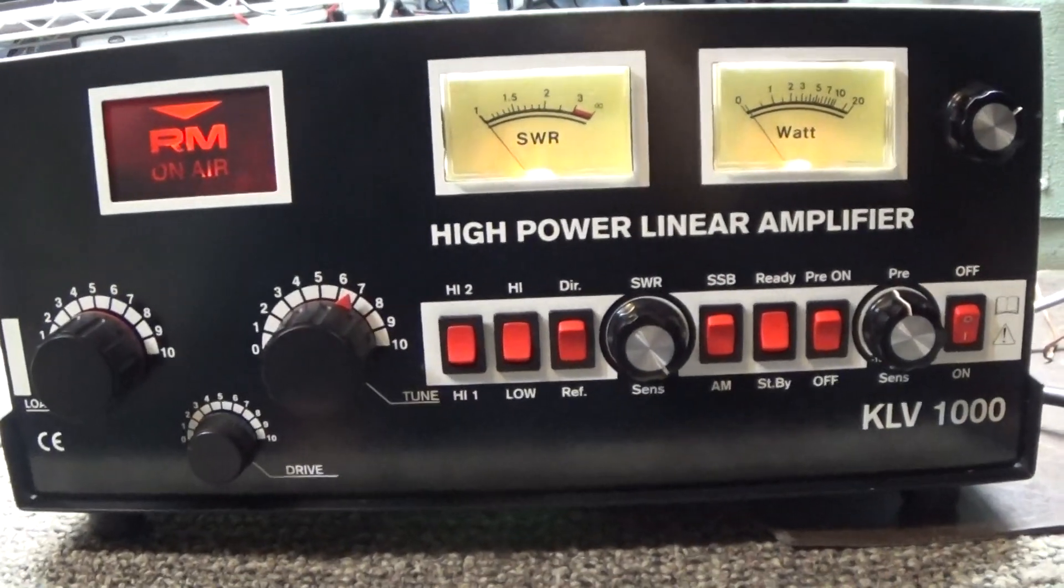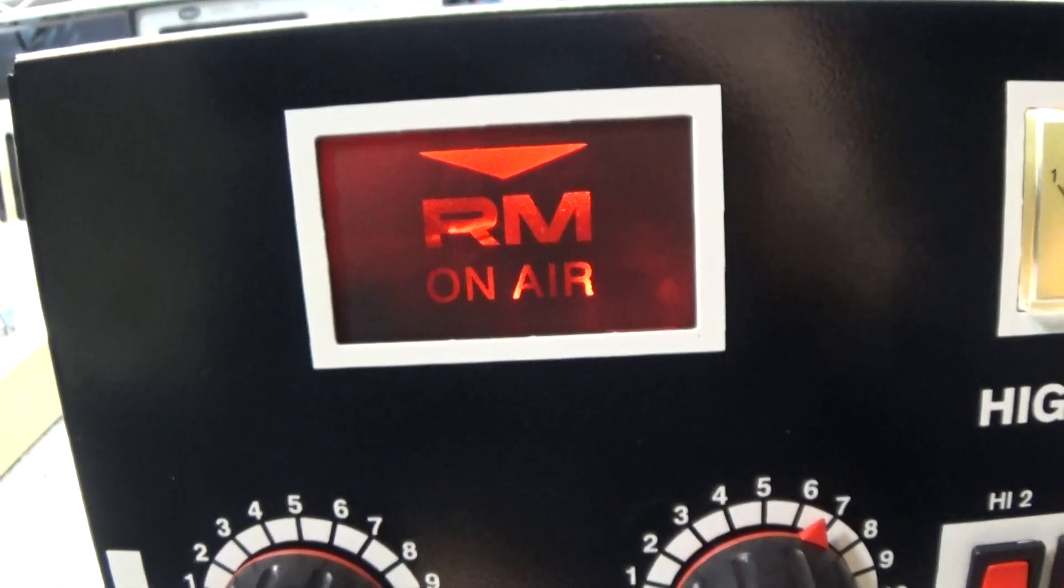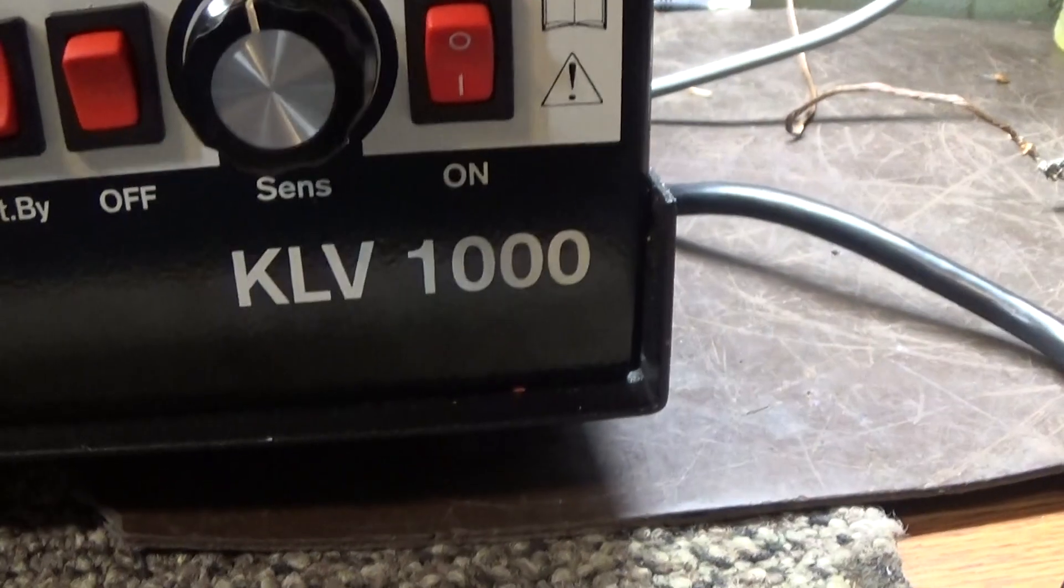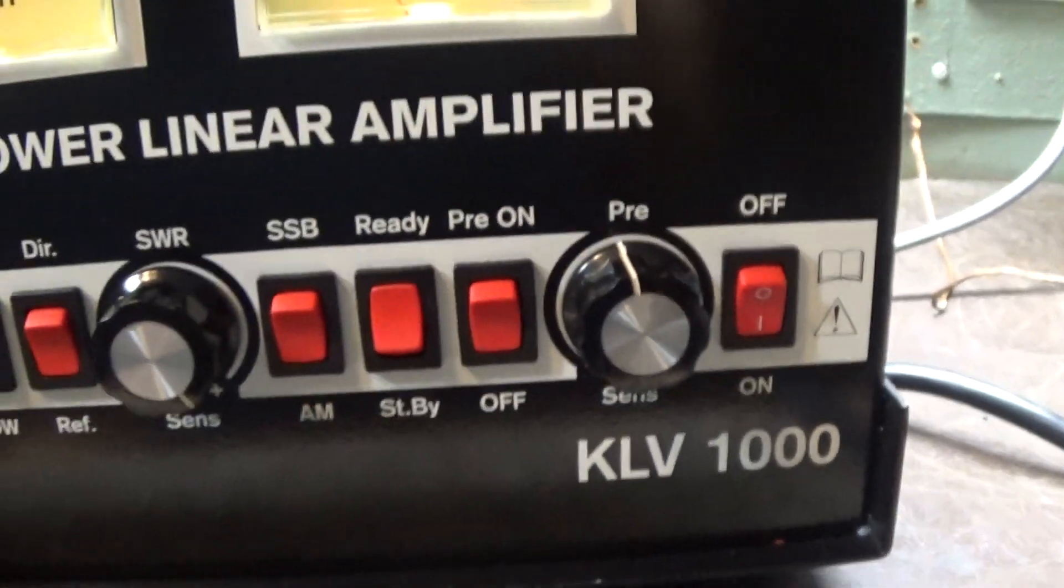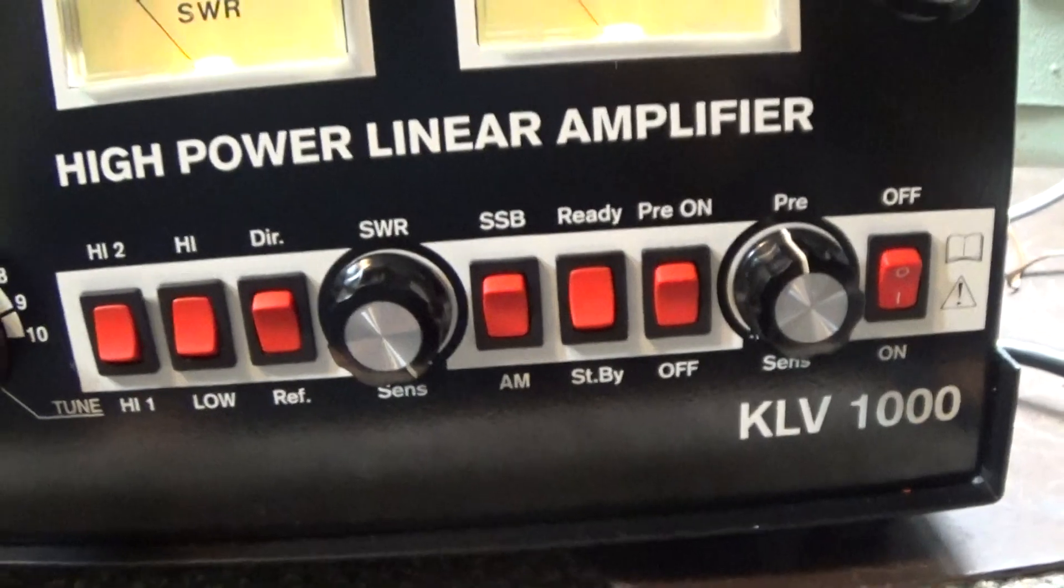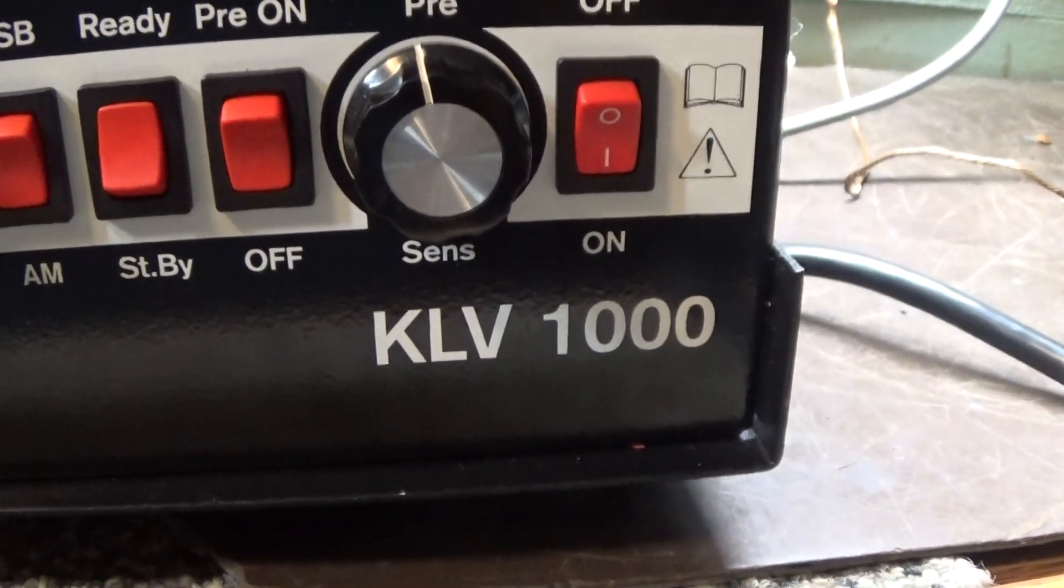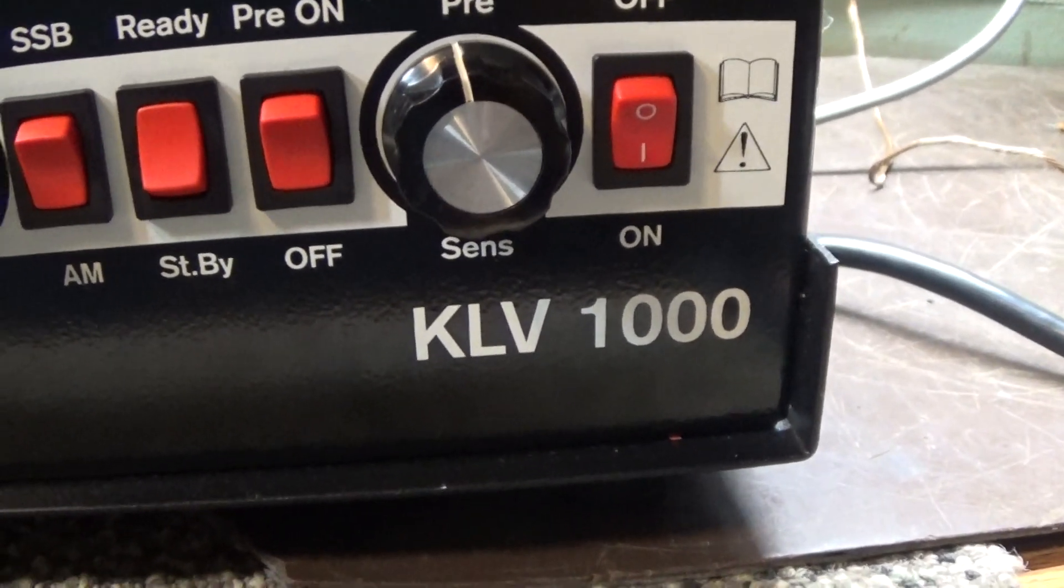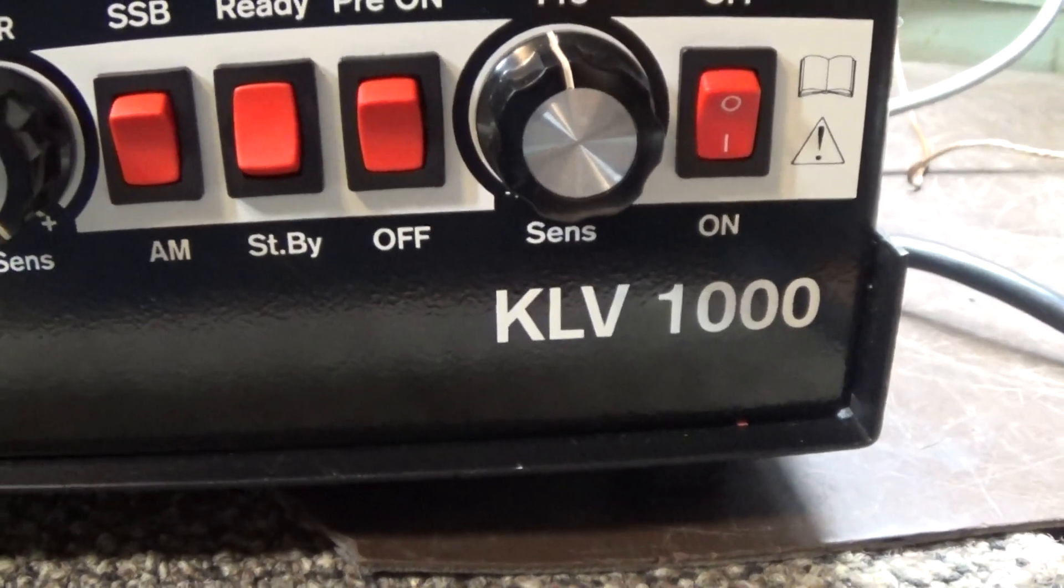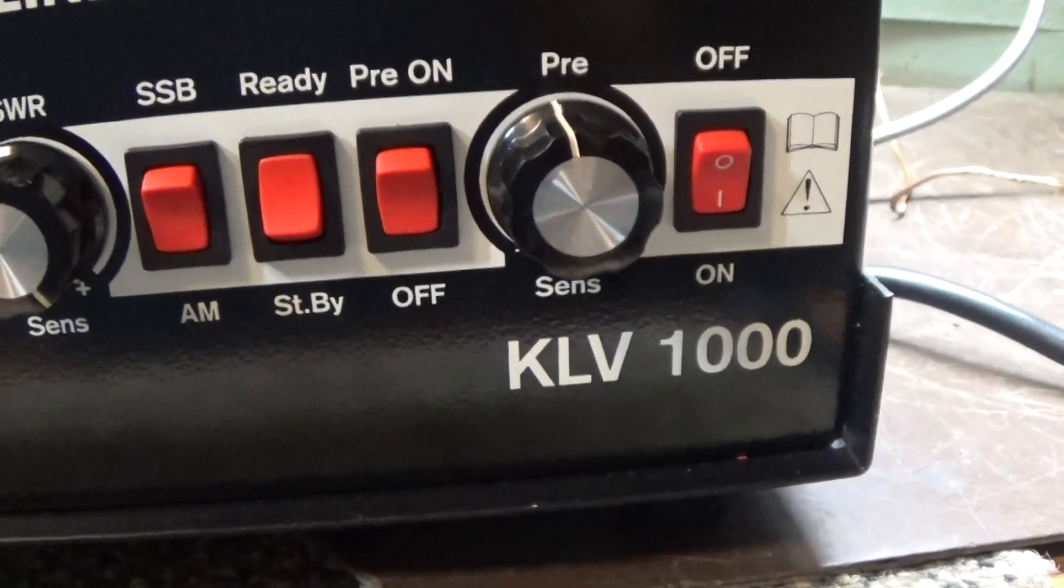Today we're going to do a demo of the RMI or RM Italy made in Italy model KLV 1000 linear amplifier. Some might have noticed that I already made a video on a model KLV 1000P with the P at the end, and the P model does not have a driver tube and it's a high drive. This one is one driving four with the driver tube and it's a low four watt drive amplifier.